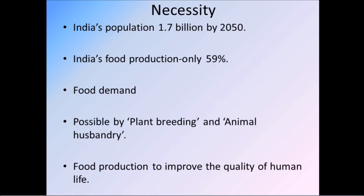So what is the necessity of this breeding of a plant or animal? India's population will be 1.7 billion by 2050. At that time, India's food production will be only 59%, so the remaining percent of food will be in demand. There will be a food demand, and this can be made possible by plant breeding and animal husbandry.